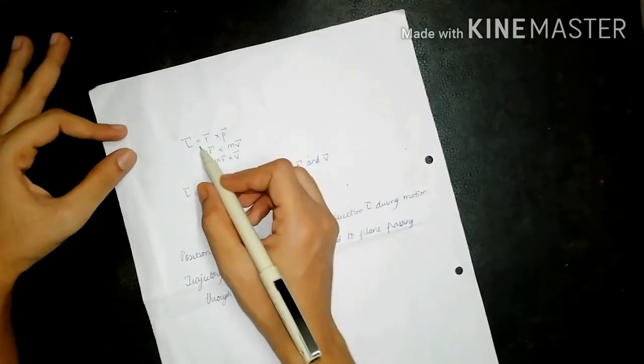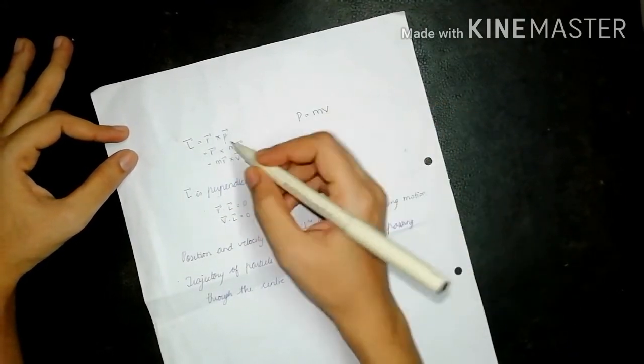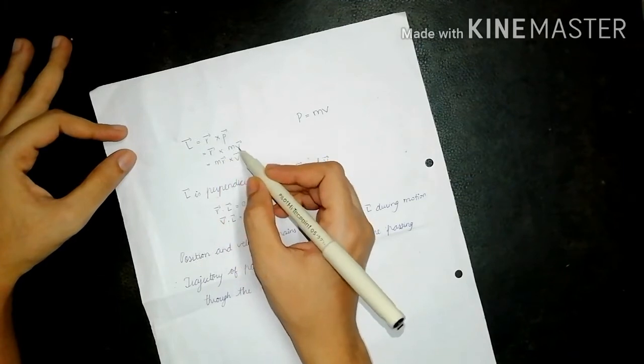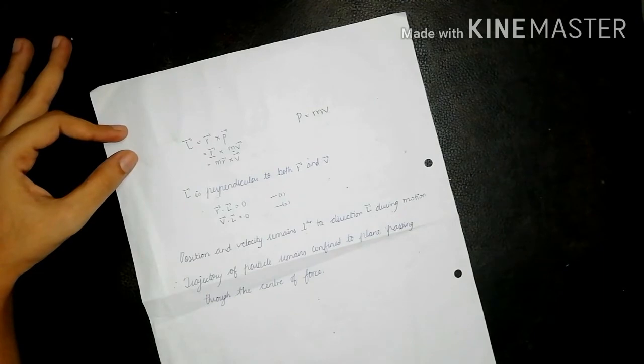Now, l bar equals r bar cross p bar. P can also be written as mv. So r bar cross mv bar, taking m out, gives mr bar cross v bar.